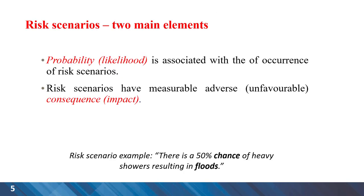There are two main elements when looking at any risk scenario. Probability or likelihood is the first one, and we have the consequence or impact. As an example, there is a 50% chance of heavy showers resulting in floods — so we have the element of chance or probability and the consequence.